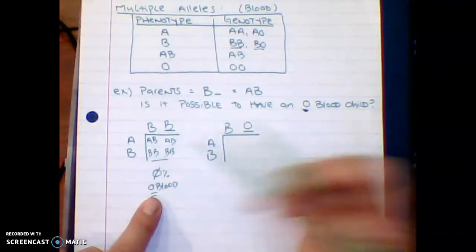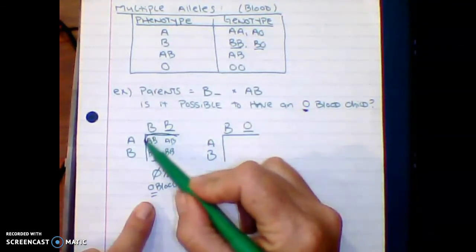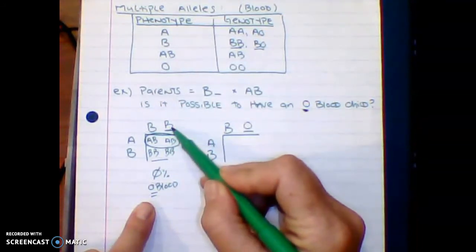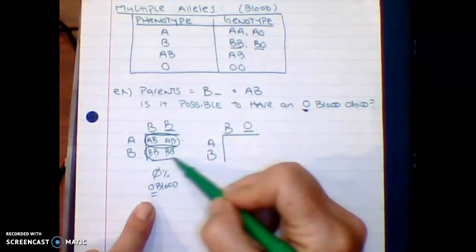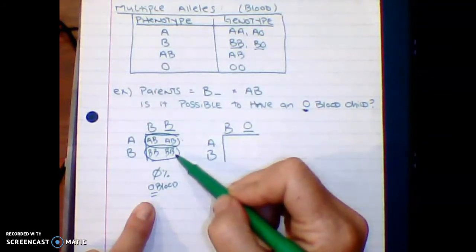And if I were to ask you, well, what could the options be, then you would say, well, if the dad was BB, then we have 50% of the children would be AB, and then 50% would be BB.